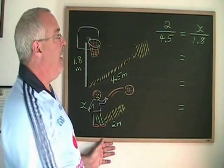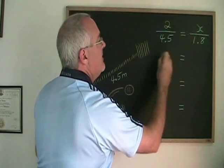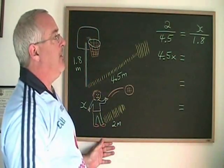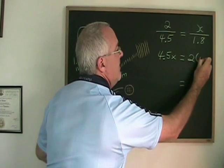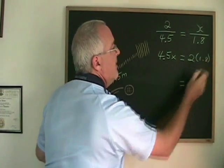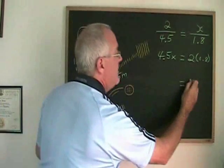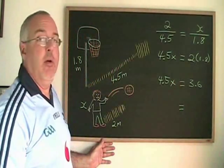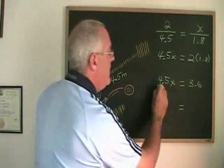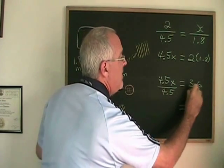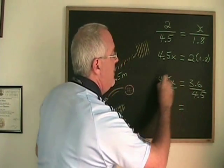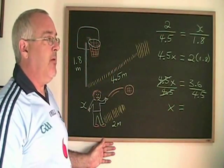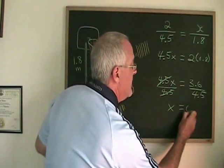Cross multiplying, bottom times top gives me 4.5x, and top times bottom gives me 2 times 1.8. 2 times 1.8 is 3.6. And now I have to divide both sides by 4.5. These cancel. My x is now isolated and is equal to 3.6 divided by 4.5, which is 0.8.